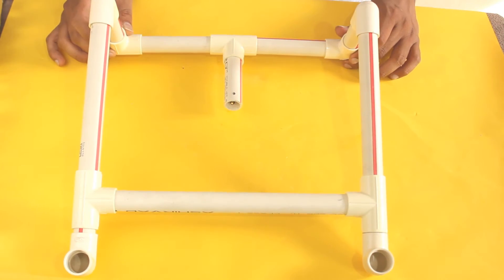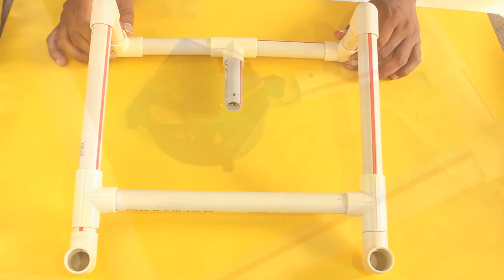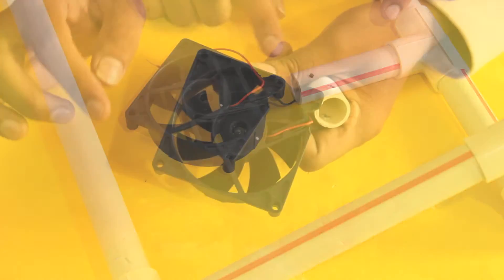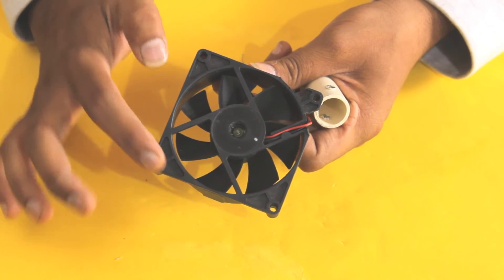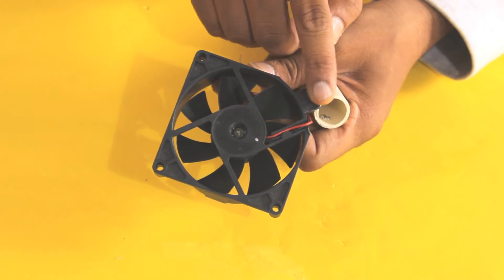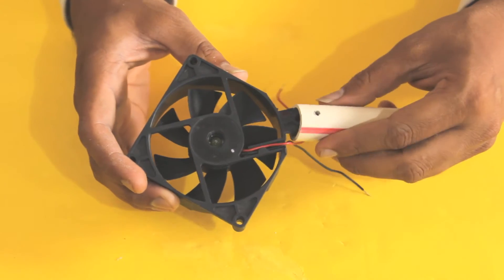The laptop cooling pad is ready. Now let us attach the cooling fan. We will attach the cooling fan here. The actual edge of the cooling fan is like this. I trimmed this edge to fit into this PVC pipe like this.